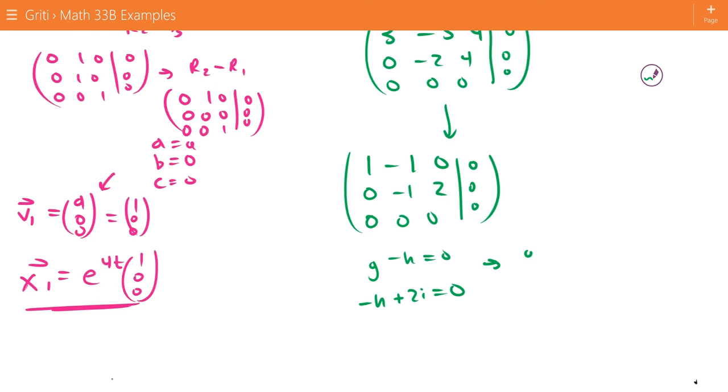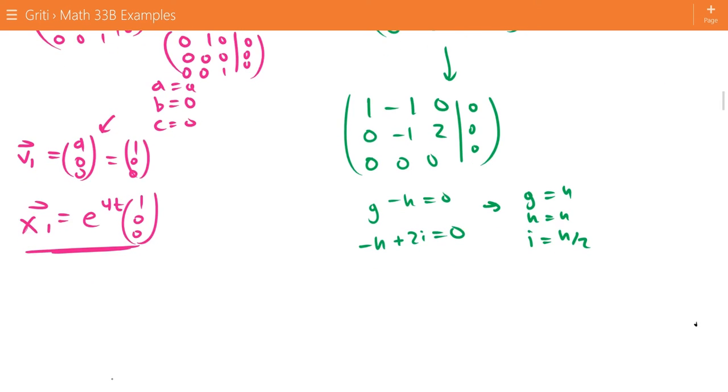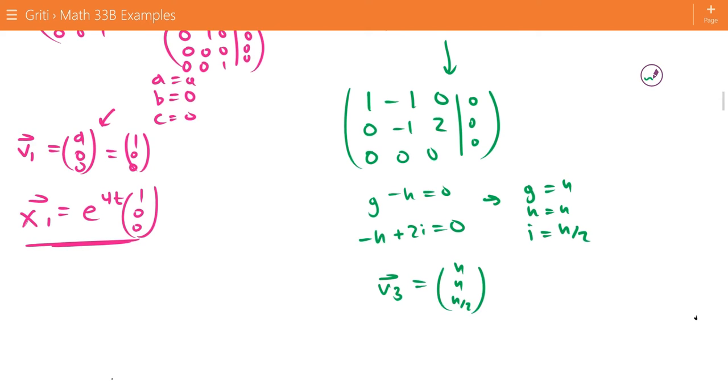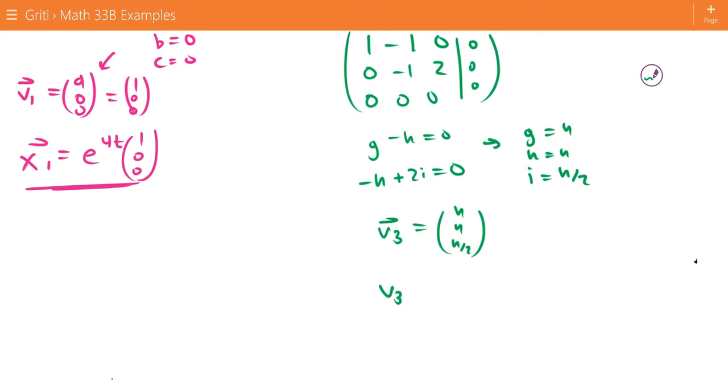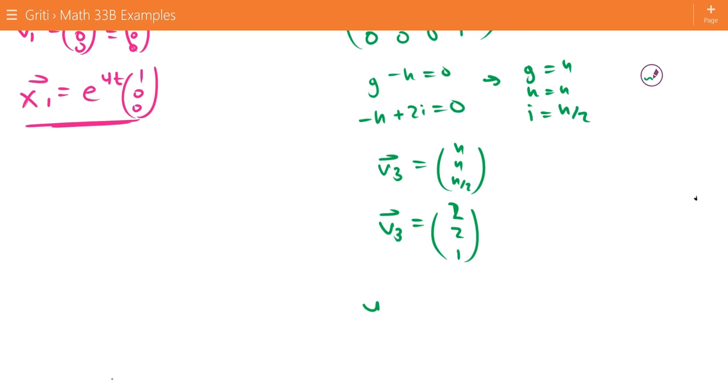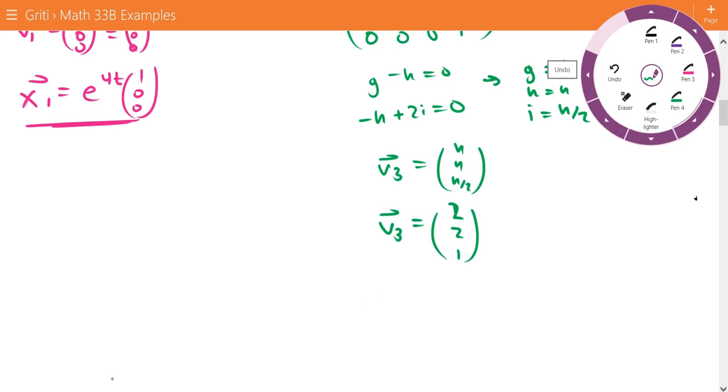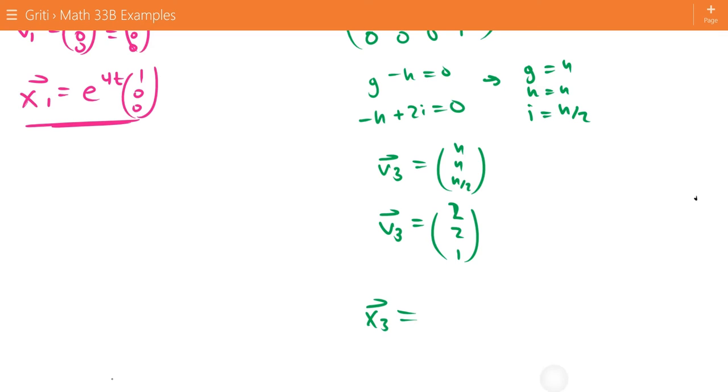So that tells us G equals H, H equals H, and I equals H over 2. So we set H to equal 2, then we get our third eigenvector 2, 2, 1. So this gives us our third solution, X3, not Y3, which is e to the t times 2, 2, 1.